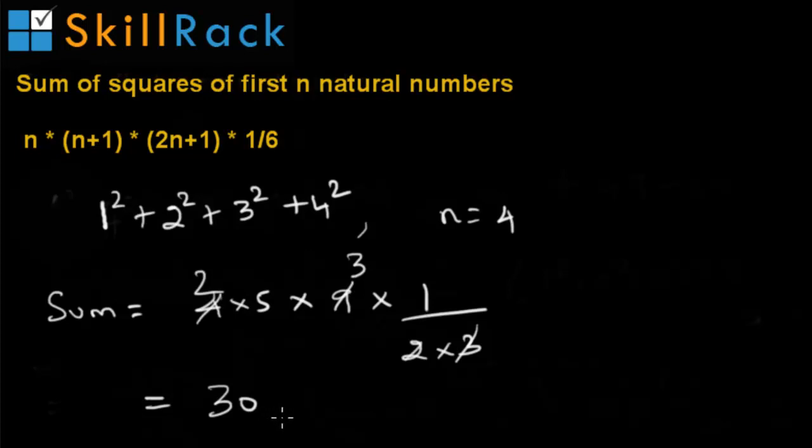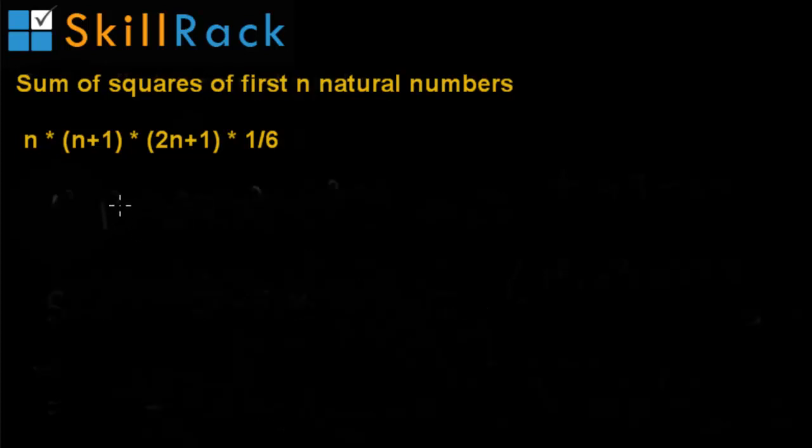Let us consider another example which is not straightforward. Let us say we have to find the sum of squares of 4 squared plus 5 squared plus 6 squared plus 7 squared.